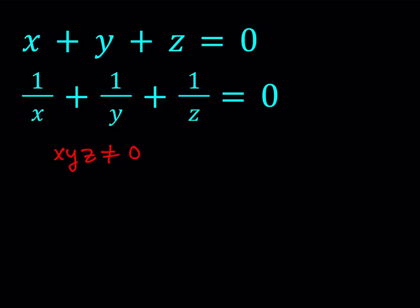Under those conditions, let's take a closer look at this system. Now one thing we can do is make a common denominator in the second equation. So let's go ahead and make a common denominator. You're going to get something that looks like this: xy plus xz plus yz divided by xyz, and that's going to equal 0.